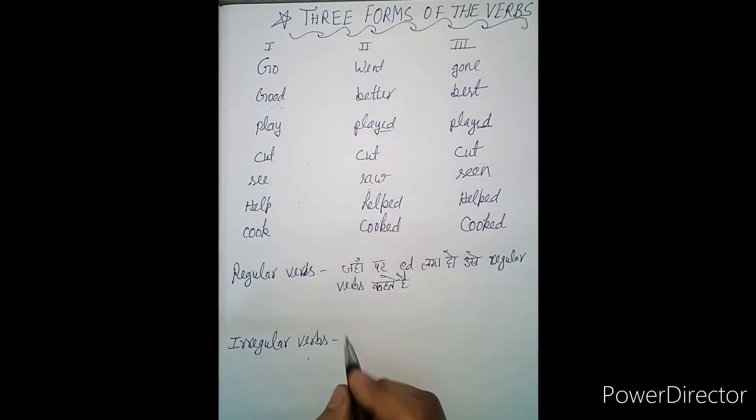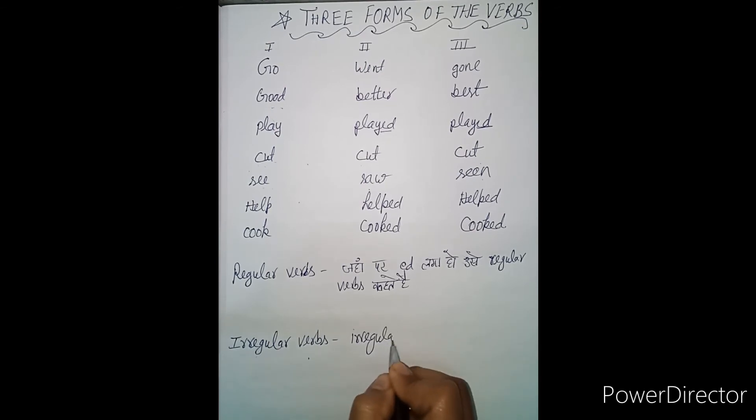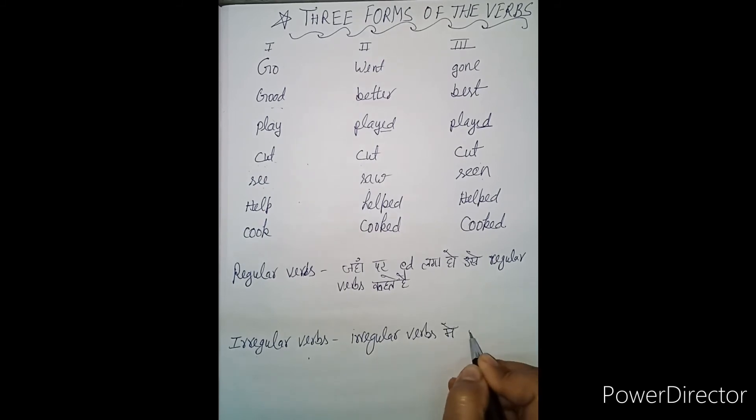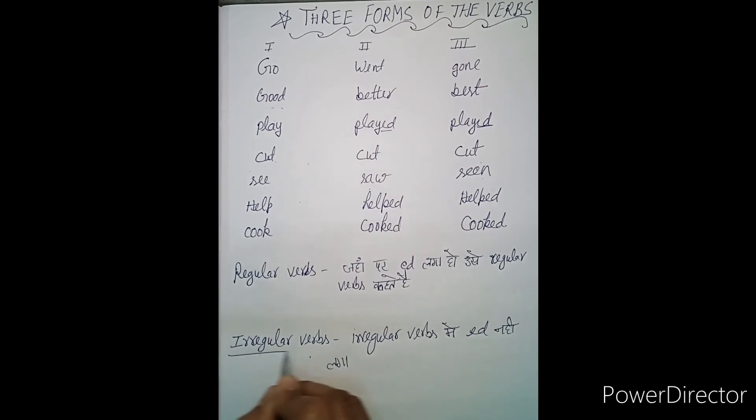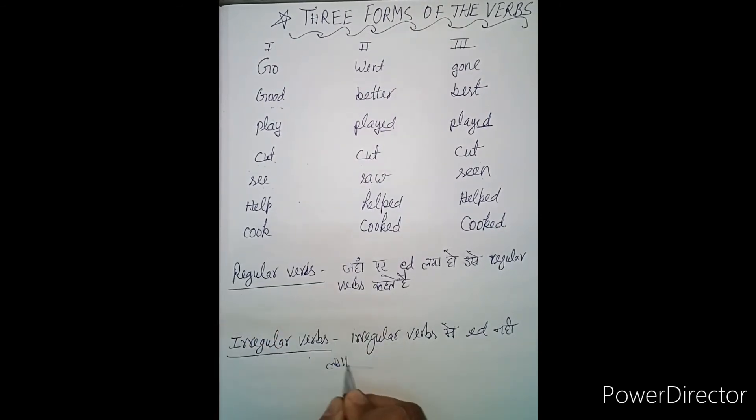Like cut, cut, cut - we don't say cutted, cutted. See - we don't say seed, seed. Good - we don't say gooded. These irregular verbs don't follow the -ed pattern, so we cannot add -ed to irregular verbs.